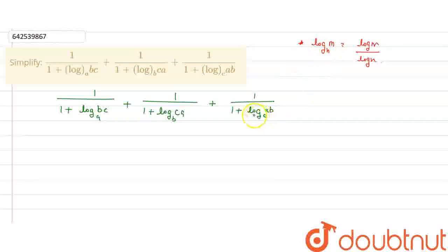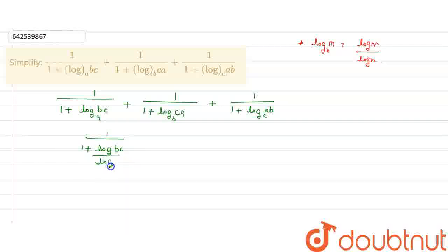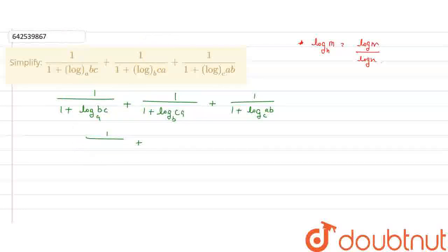Now, we can write log bc base a as 1 plus log bc upon log a. And we can also break the bc term further, writing it as 1 plus log b plus log c upon log a.